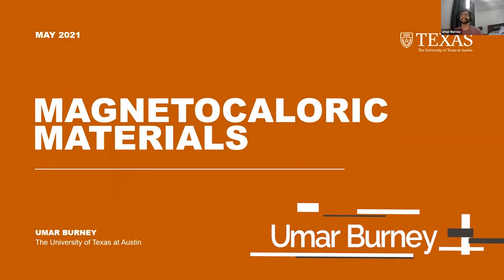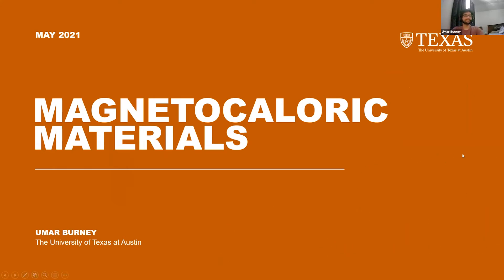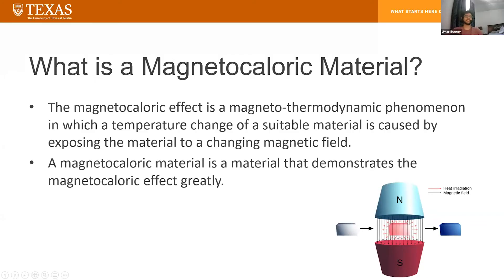Hey everyone, I'm Umar and I'll be doing my presentation on magnetocaloric materials. So what is a magnetocaloric material? We first have to understand what the magnetocaloric effect is. The magnetocaloric effect is a magnetothermodynamic phenomenon in which a temperature change of some suitable material is caused by exposing the material to a changing magnetic field. This is also sometimes referred to as adiabatic demagnetization.